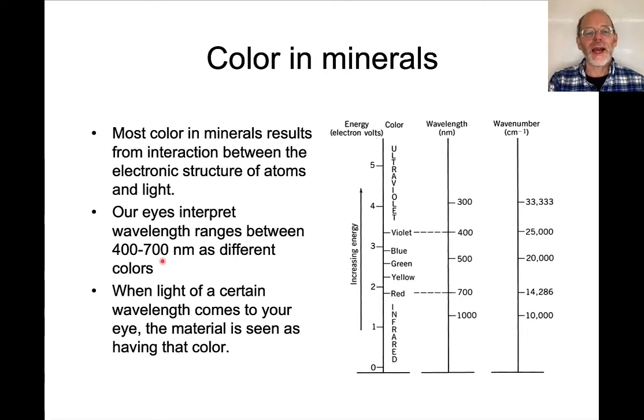But our eyes can only interpret wavelength ranges between 400 and 700 nanometers. So there can be interactions that impact infrared radiation or ultraviolet radiation, but we don't happen to see those. When there are those interactions that occur in the visible range, that's when material is seen as having color.